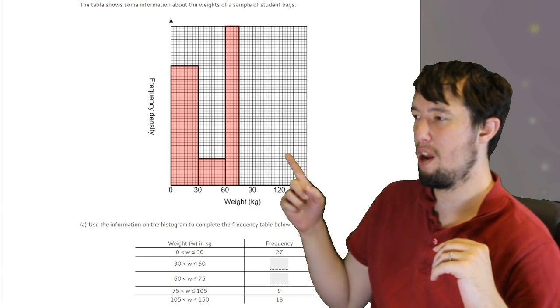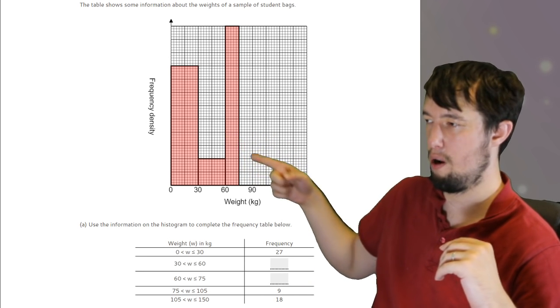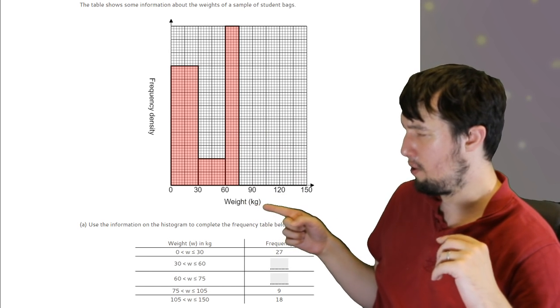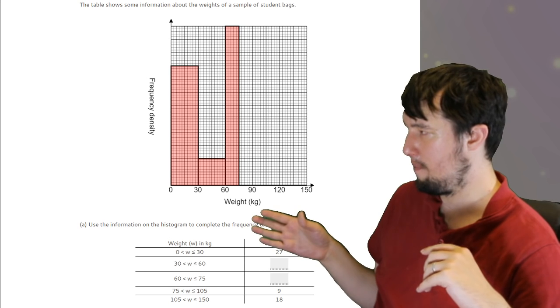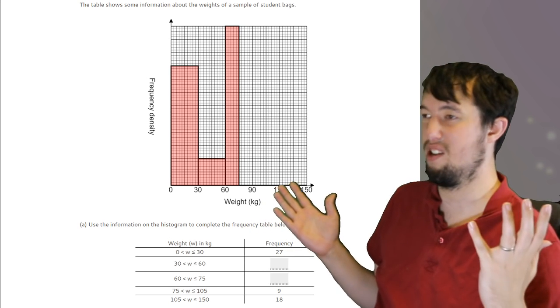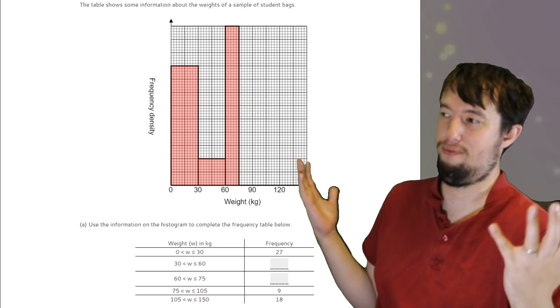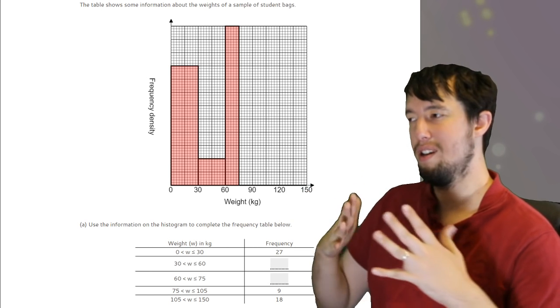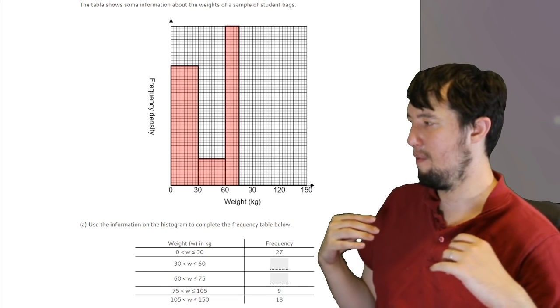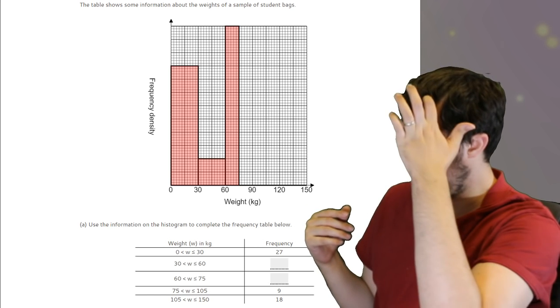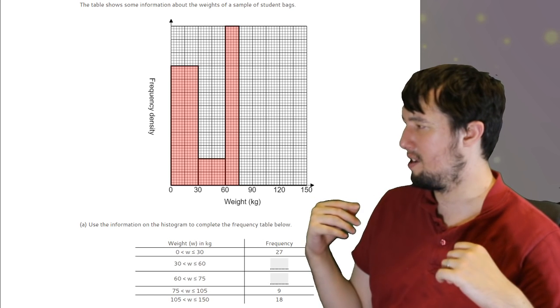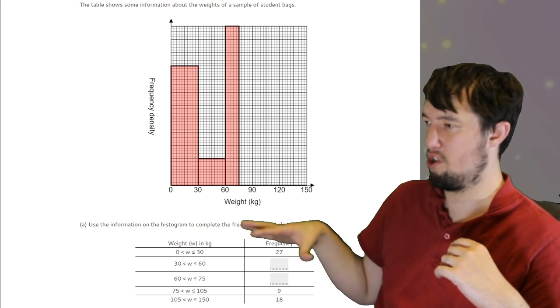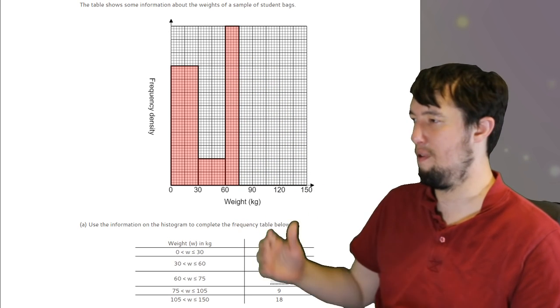The frequency is proportional to the frequency density times a class width. So they will always, when they ask this question, give you an example of one. Always check that example. So what is this one? 0 to 30, so class width is 30, and the height, well it actually doesn't have a height on this one. But make sure you check the one that they give you to see if it makes sense. So for this one I would do 30 times what equals 27, and then that will tell me what the height is, and then I'd just use that triangle to work out the rest of them.